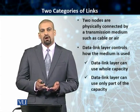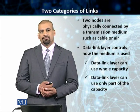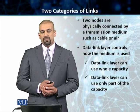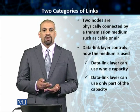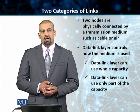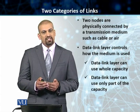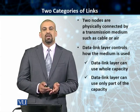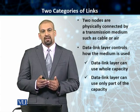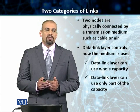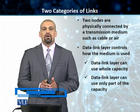Let's talk about the categories of links that we employ at the data link layer. We have nodes at the data link layer level, and those nodes are connected by multiple links. The data link layer decides how these links — which are in essence your transmission media, they can be guided media or unguided media, they can be wired or wireless — are going to be used. The data link layer is the supreme commander of deciding how these links are going to be used.